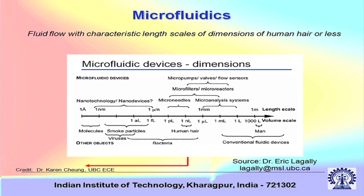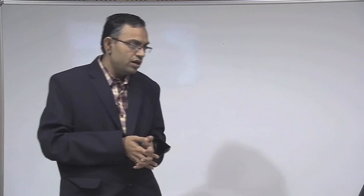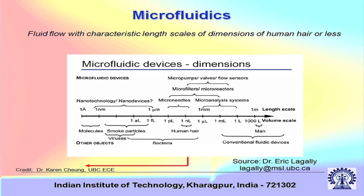In terms of how dimensions relate to real applications: angstroms to nanometers corresponds to molecular dimensions. Nanometers to micrometers covers smoke particles, viruses, and nano devices — the common buzzword nanotechnology is used for applications over these length scales. At slightly larger scales you think of bacteria, and devices closely associated with microfluidics like micro needles, micro reactors, micro filters, and micro analysis systems.